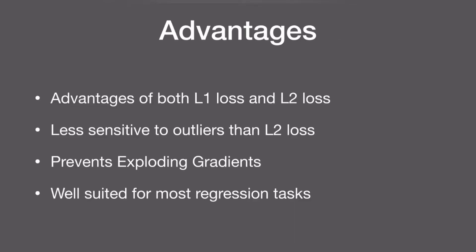The advantages are: it behaves as both L1 loss and L2 loss in different conditions, so it has the advantages of both. It is less sensitive to outliers. It also prevents exploding gradients. What is an exploding gradient? In our previous discussions on activation functions, we came across the vanishing gradient problem where gradients become zeros and stall the training process. Similarly, there are chances that gradients explode — going to very high values during training. Smooth L1 loss prevents that exploding gradient problem.